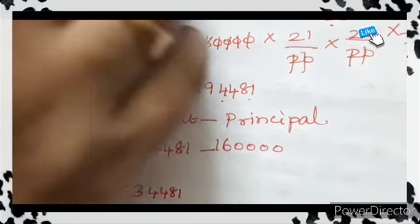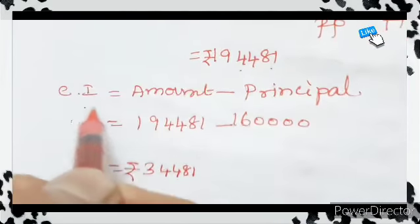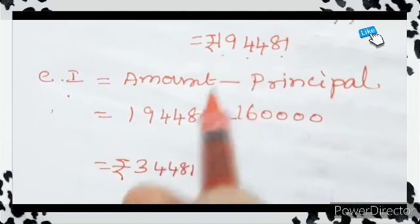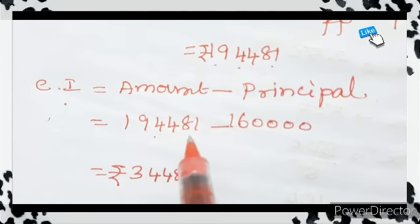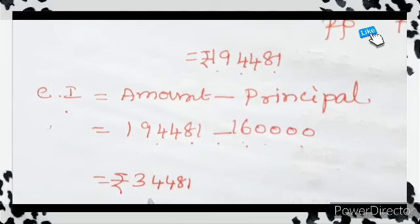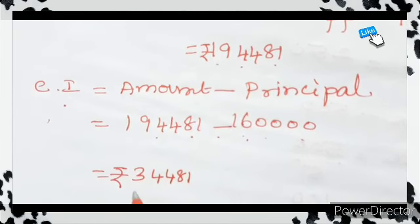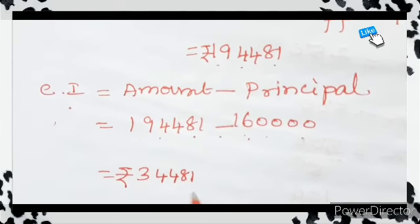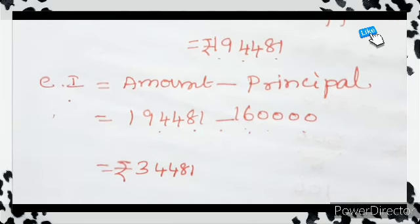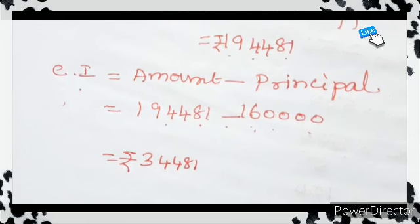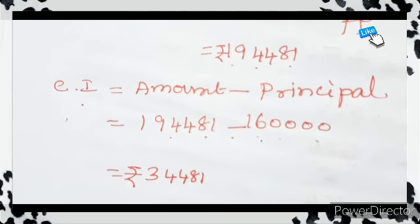The question is to find the compound interest. Compound interest equals amount minus principal. Therefore, amount equals 194,481 minus principal equals 1,60,000. If you subtract, you get the answer 34,481. In this problem, the calculation must be done very, very carefully, otherwise the answer will not come.